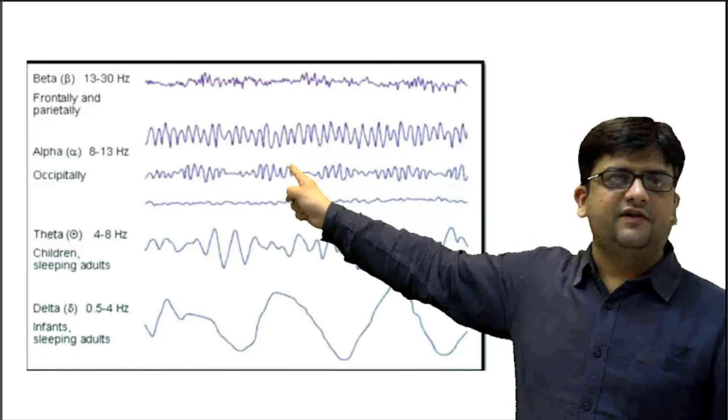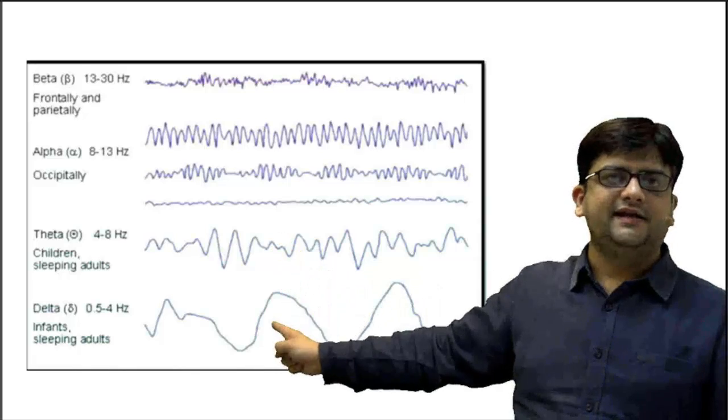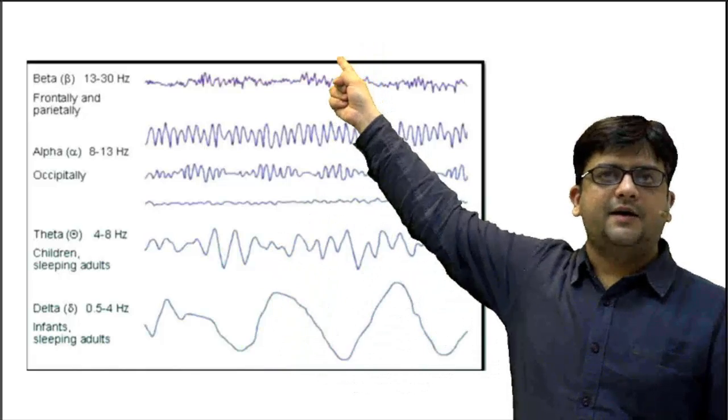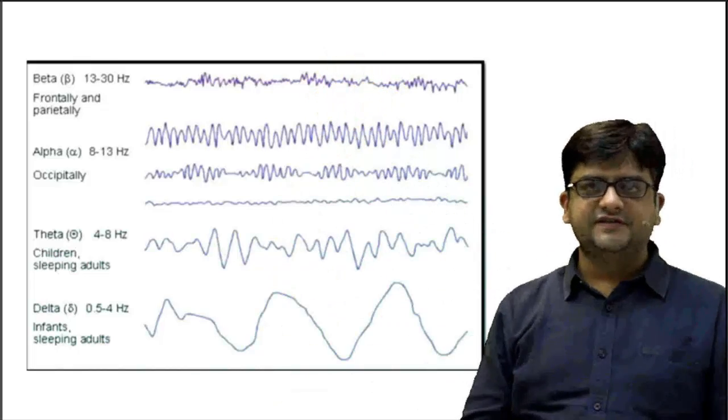So these are the EEG waves: beta 13 to 30, alpha 8 to 13, theta 4 to 8, delta 0.5 to 4, and the highest being gamma, gamma is 25 to 100. This is the type of question for AIIMS.